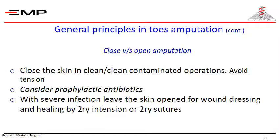Open versus closed amputations. Close the skin in clean and clean-contaminated operations. If you close the wound, consider prophylactic antibiotics, and avoid tension while closing. With severe infection, leave the skin open for wound drainage and dressing — it may heal by secondary intention or you may close it later by secondary suture.